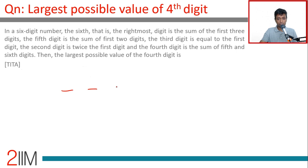In a six-digit number, the sixth digit (the rightmost digit) is the sum of the first three digits. The fifth digit is the sum of the first two digits. The third digit equals the first digit.